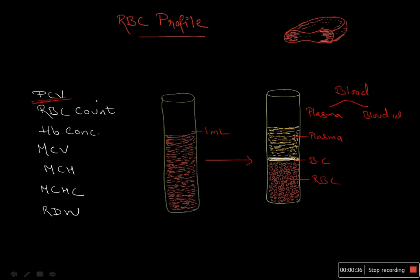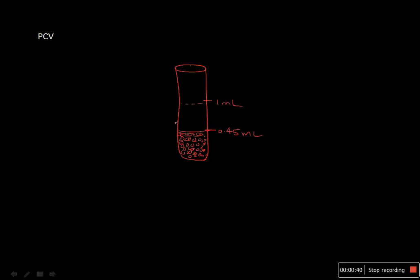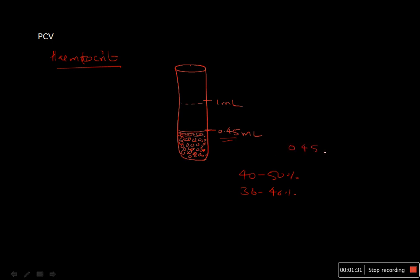Packed cell volume is the volume of blood when RBCs are packed together. If you have 1 ml of blood, 0.45 ml is the packed cell volume — meaning 0.45 ml out of 1 ml contains only RBCs. This packed cell volume is also called hematocrit. Normal values are 40 to 50% in males and 36 to 46% in females. This 0.45 value will be used in calculations.